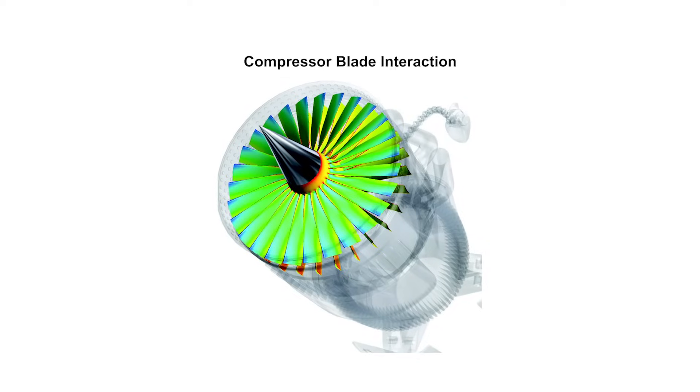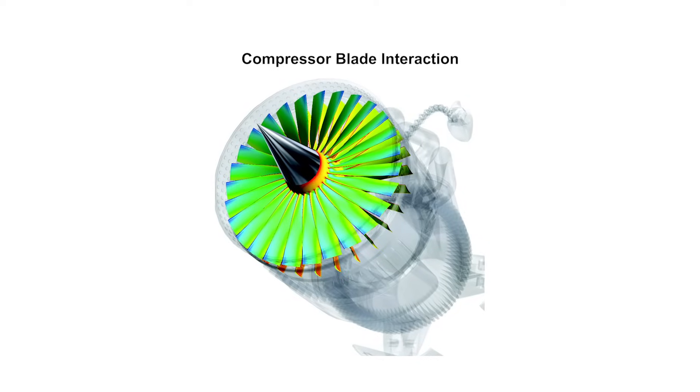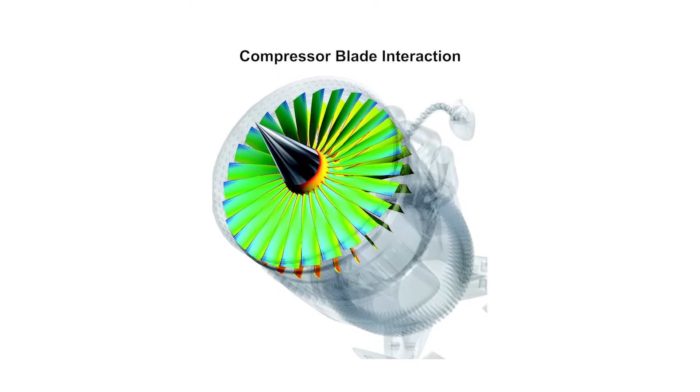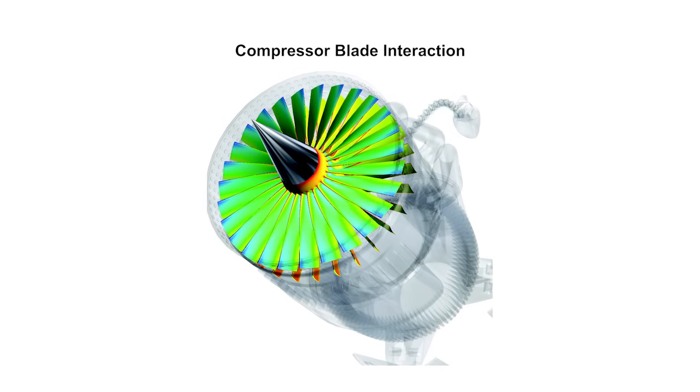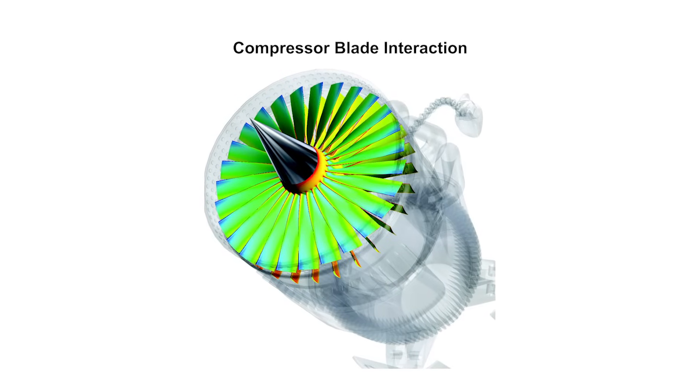Turbo machinery in particular is one of the earliest adopters of CFD in its infancy, and so because of that a lot of design processes have been kind of cemented in place. For instance, using CFD was normally very much at the beginning stages when they're planning or developing the blade shapes, but then it would be handed off to a series of additional physics — mechanical, structural, rotor dynamics, heat transfer, etc.